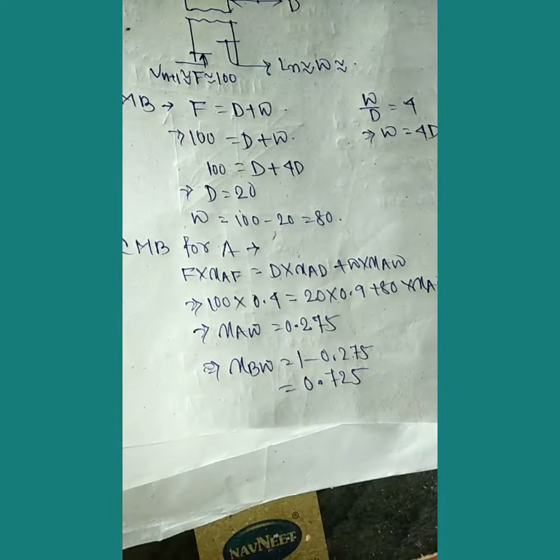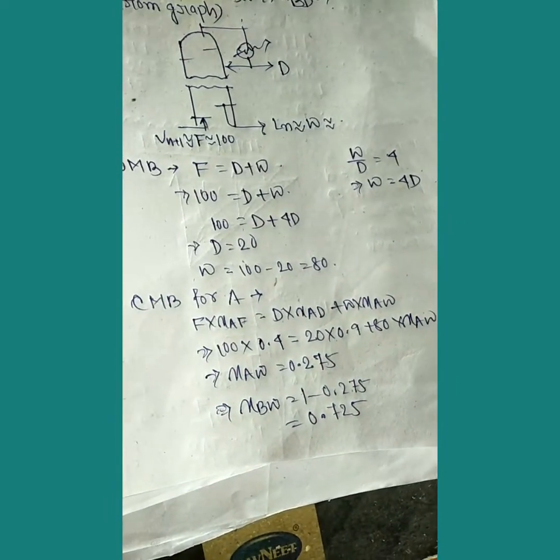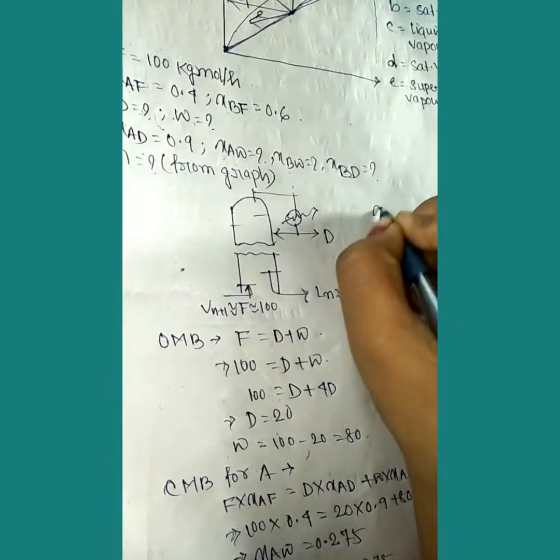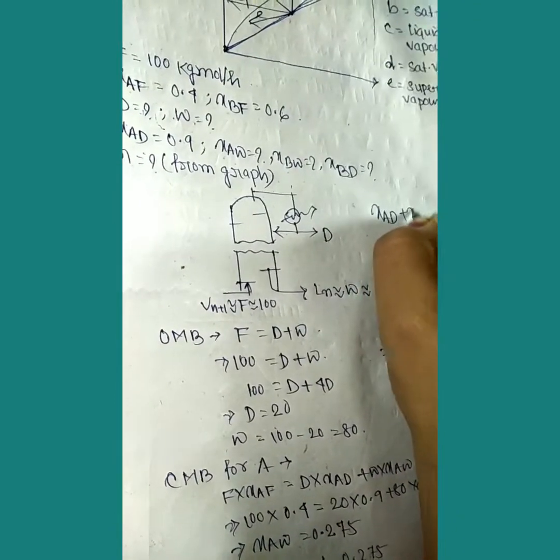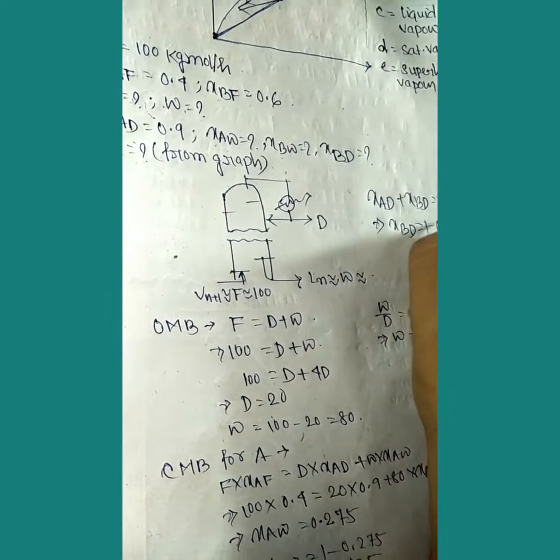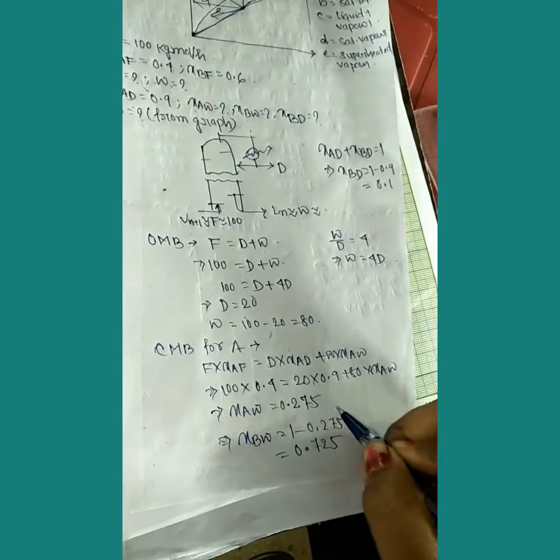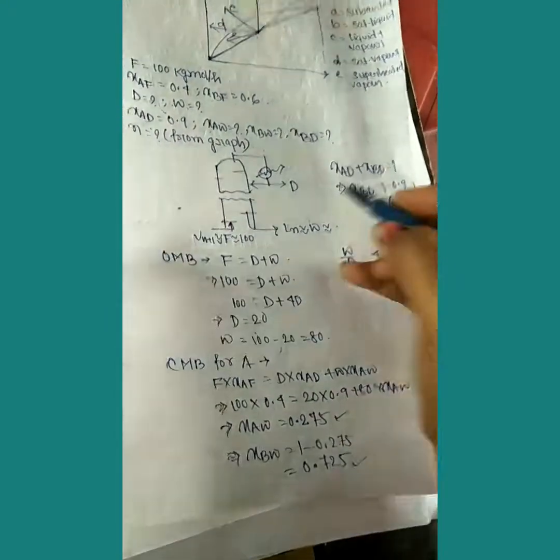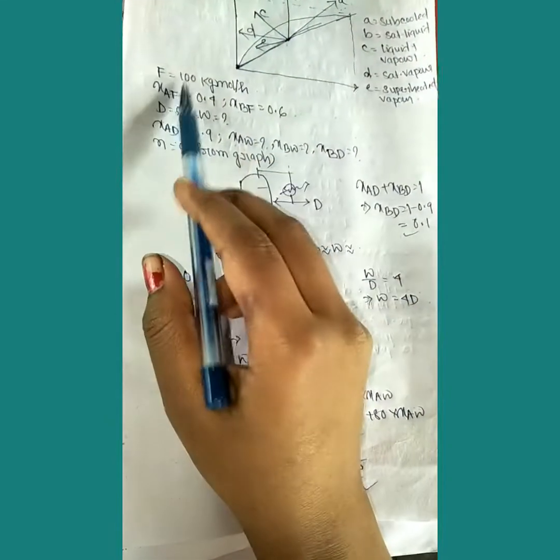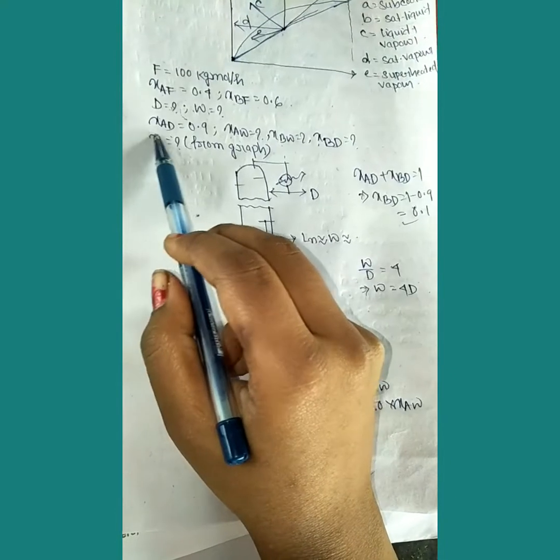Solving: 40 equals 18 plus 80 xaw, so xaw equals 0.275. For benzene in bottoms: xbw equals 1 minus 0.275 equals 0.725. For component B: xbd equals 1 minus xad, so xbd equals 1 minus 0.9 equals 0.1. We've now calculated all compositions.